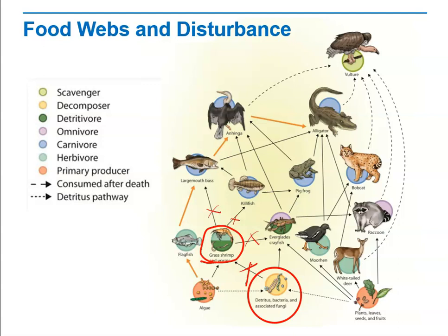All of these effects came about from the change in population of a single part of the food web — the detritus bacteria and associated fungi — and that effect came about from a simple, single oil spill.